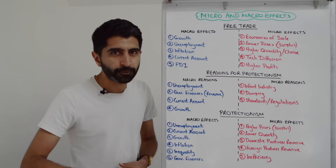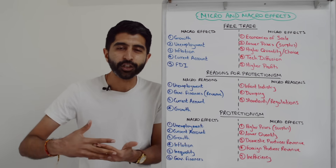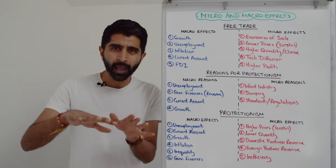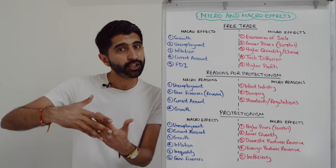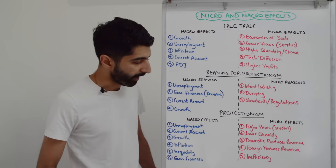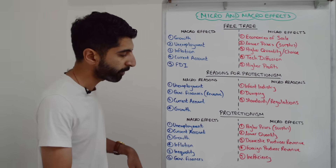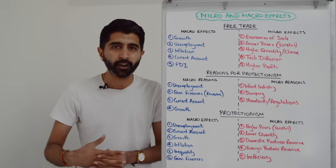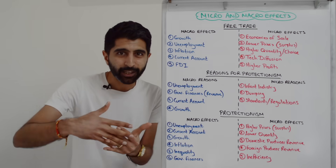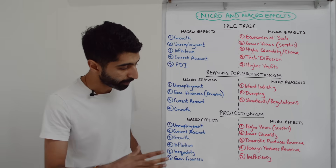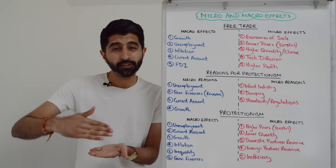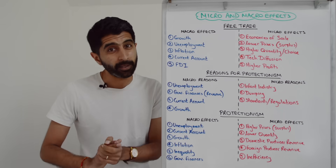What about the effects of protectionism? Let's go macro effects first. Protectionist measures that encourage more domestic production can protect against unemployment — preventing it from rising and actually creating jobs. That's your link to unemployment as a macro effect. Protectionism can also squeeze imports and thus improve a country's current account position, and in that way can potentially lead to higher economic growth as a macro effect.